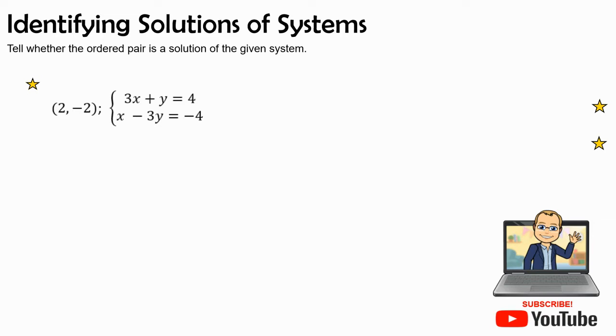Now we talked about it in previous videos that the solution is where the two lines or the two linear functions cross. So let's check it out and see if that point is on either one or both of those lines and therefore we could see if it's a solution or not.